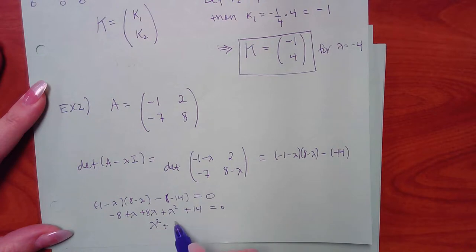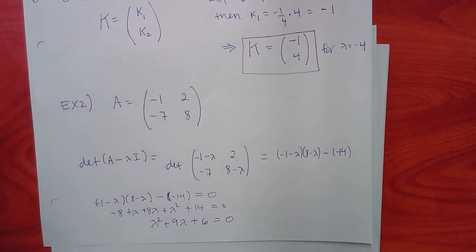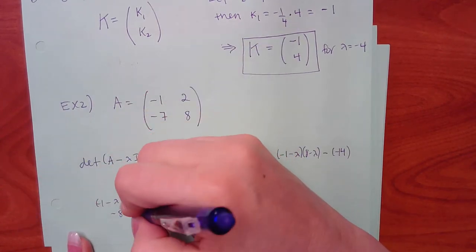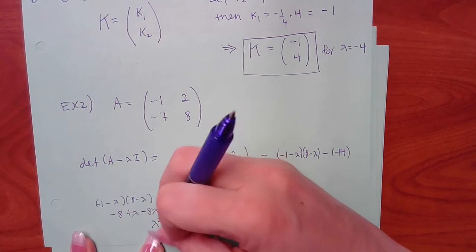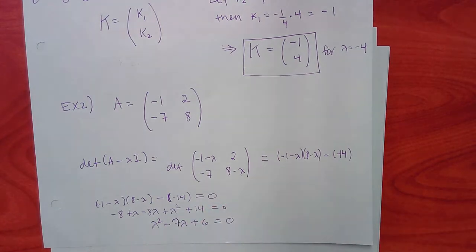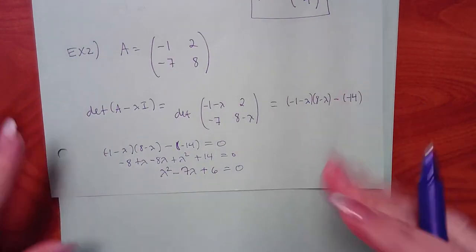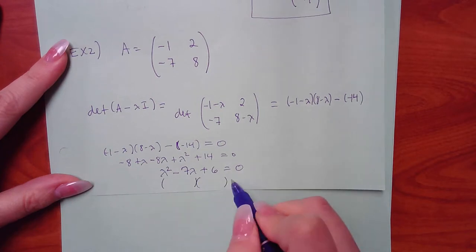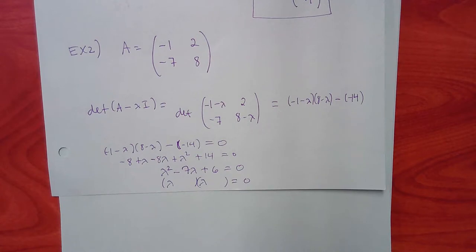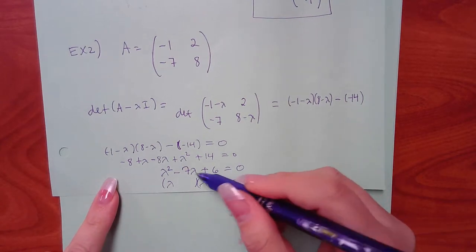Putting the polynomial in order, we can factor it. We need factors of 6 that give us 7 — that's 6 and 1, giving (lambda minus 1)(lambda minus 6) equals zero.